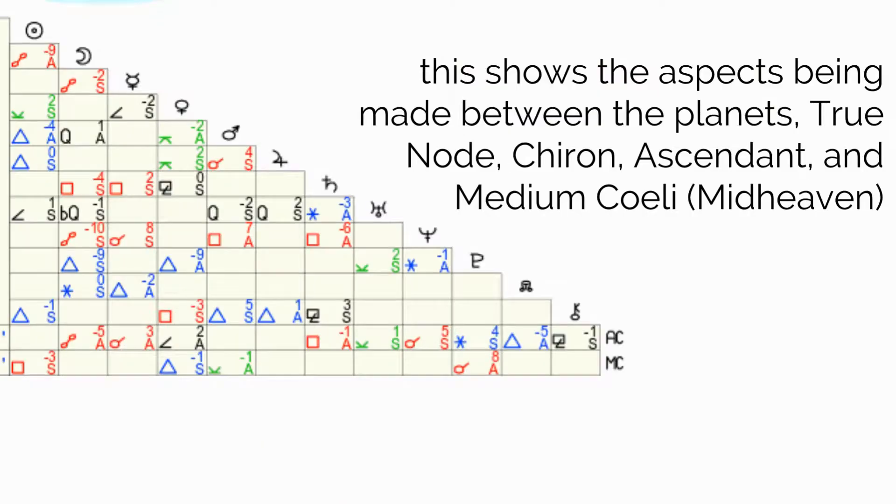And to the right is an Aspect Grid. Now it shows the aspects made by the planets to one another, as well as to the True Node, Chiron, Ascendant, and Midheaven. The grid has a symbol for the aspect being made. These are the symbols.